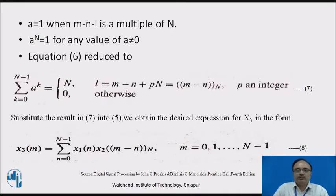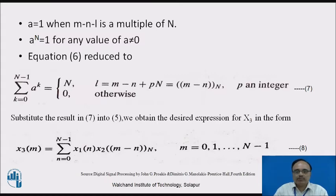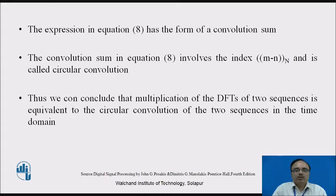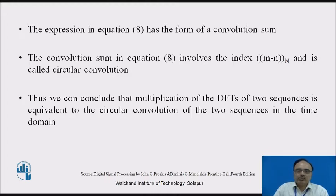Substituting these two approximations — case 1: a=1, and case 2: a≠1 — the final equation for circular convolution can be shown as: x3(m) = summation n=0 to N−1 of x1(n)·x2((m−n) mod N), where m ranges from 0 to N−1. This is the basic equation of circular convolution. Comparing with the standard convolution sum, the index (m−n) is periodic in terms of capital N, which is why it is called circular convolution. Thus, multiplication of the DFTs of two sequences is equivalent to circular convolution of those sequences in the time domain.